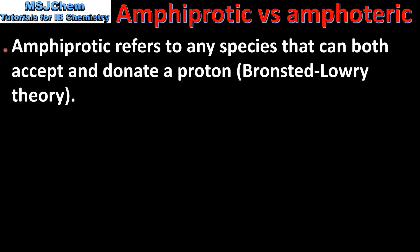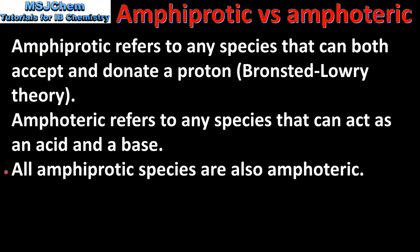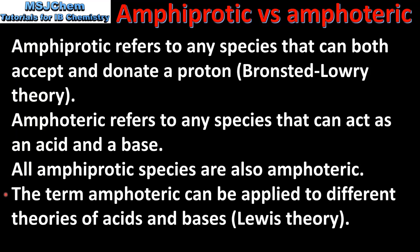Finally we'll look at the difference between the terms amphiprotic and amphoteric. Amphiprotic refers to any species that can both accept and donate a proton, and the term amphiprotic is used exclusively in the Bronsted-Lowry theory of acids and bases. The term amphoteric refers to any species that can act as an acid and a base. All amphiprotic species are also amphoteric. The difference is that amphoteric can be applied to different theories of acids and bases, for example the Lewis theory, which does not involve proton transfer. So to summarize, the term amphiprotic is used only in Bronsted-Lowry theory, whereas amphoteric can be used in all theories of acids and bases.